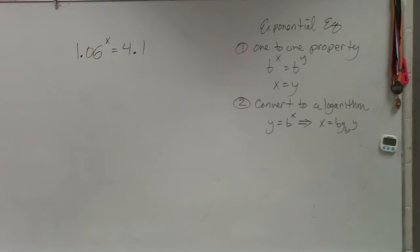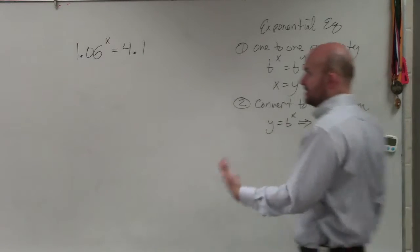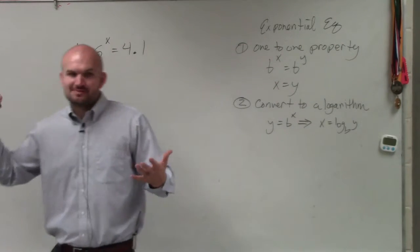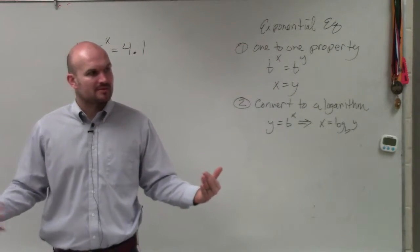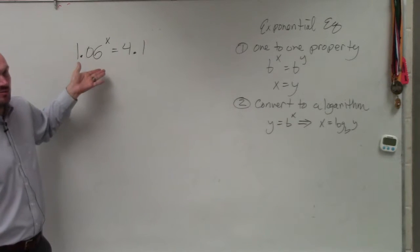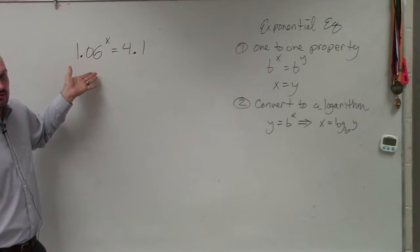You can't use the one-to-one property. It doesn't make sense here. In my notes, that's what I showed you how to do for an exponential equation—use the one-to-one property. But this doesn't make sense to use the one-to-one property. Correct?